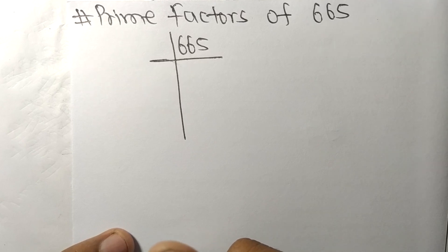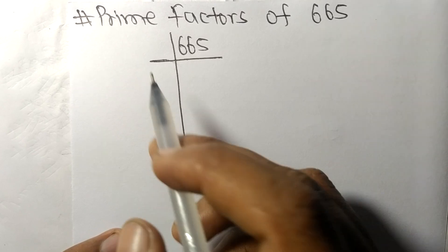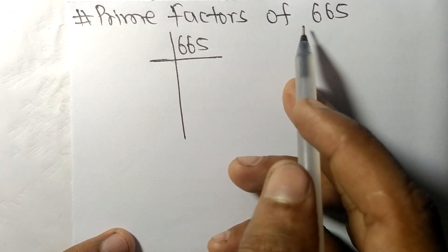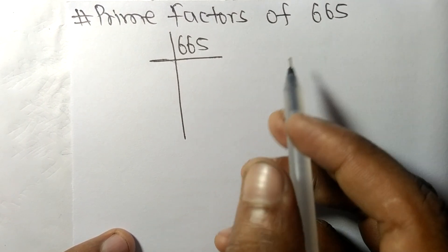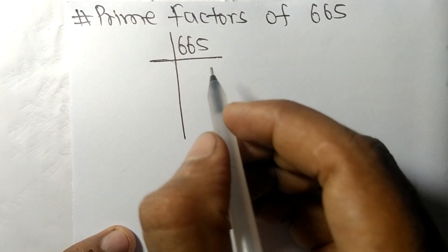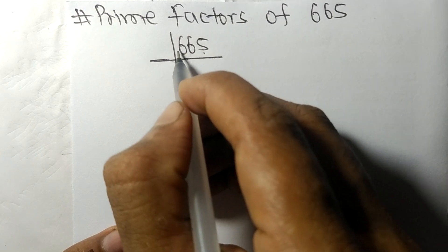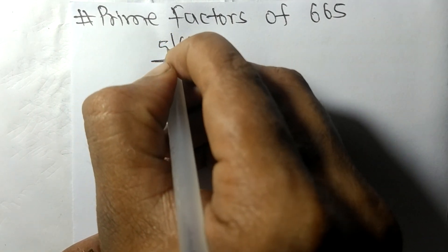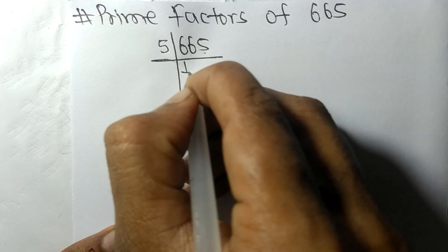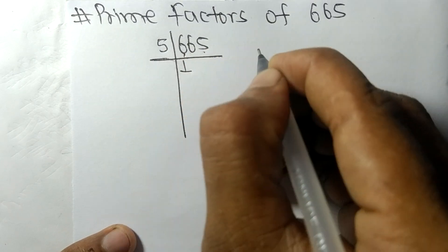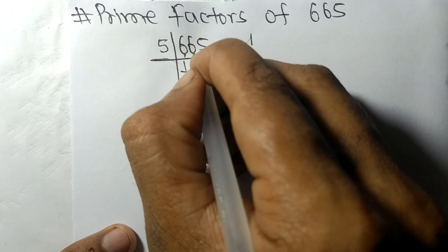Today in this video we shall learn to find the prime factors of 665. So at last it contains 5, so these whole numbers are divisible by 5. 5 times 1 means 5, remainder here 1, and this 6.